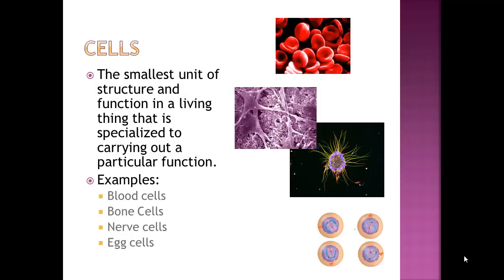So let's get started. We're going to work our way from the smallest to largest. The smallest unit of structure and function in a living thing is a cell, and cells are specialized to carry out specific functions. For example, in the human body, we have blood cells, bone cells, nerve cells, and egg cells, just to name a few.